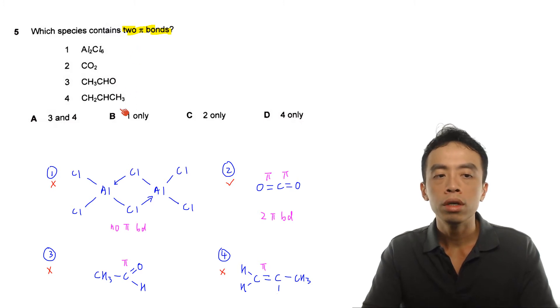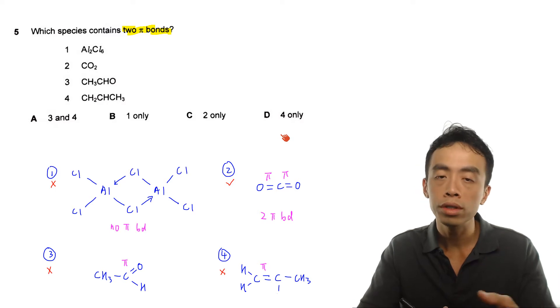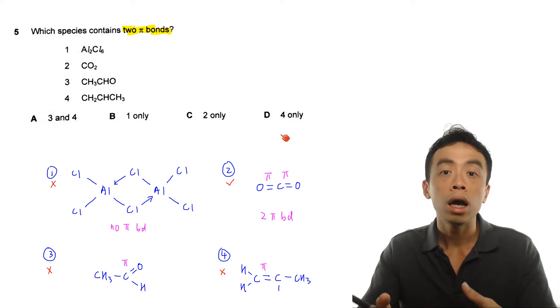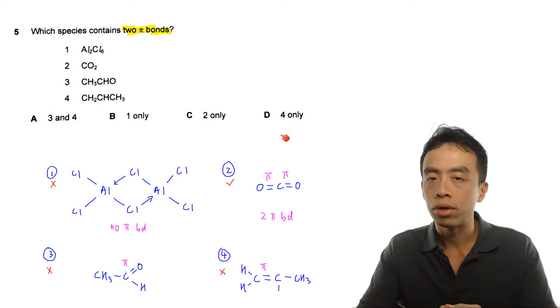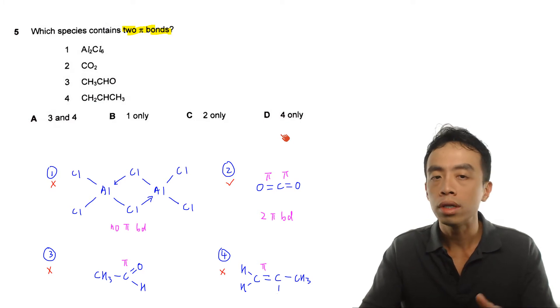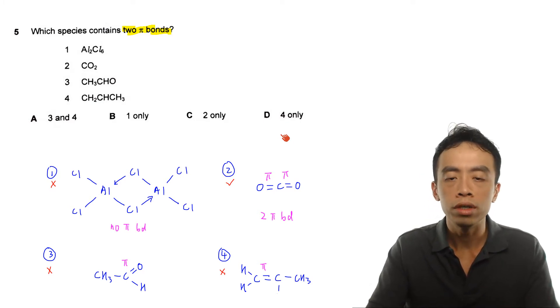Of course, we will want to choose within these 4 options which one would have 2 pi bonds, then we run through options A, B, C and D, and we want to choose the correct answer. Now, this question is under chemical bonding, and it is pretty straightforward. We just need to be able to draw out the Lewis structure for each of these species, and see how many pi bonds are present for each of these species. So in terms of concept, maybe we can briefly run through.